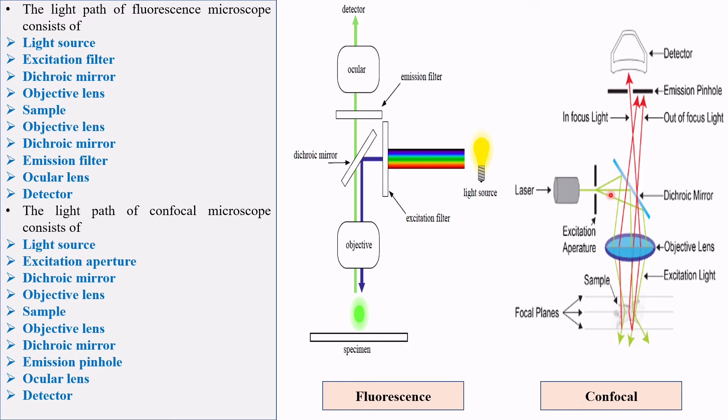In case of confocal microscope, the excitation filter has a pinhole that transmits that green light. It will transmit that green light to be focused very precisely. That is not found in fluorescence microscope.